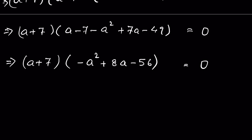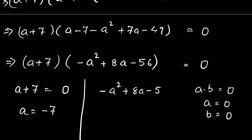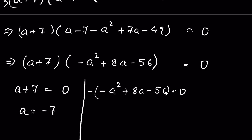Setting each factor to zero: either a + 7 = 0, giving a = −7, or −a² + 8a − 56 = 0. Multiplying through by −1 gives a² − 8a + 56 = 0.